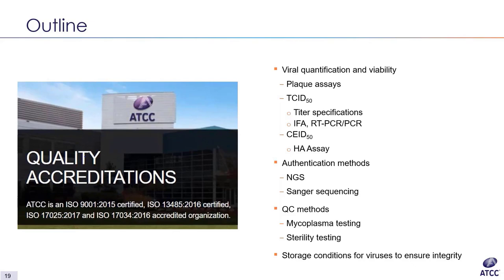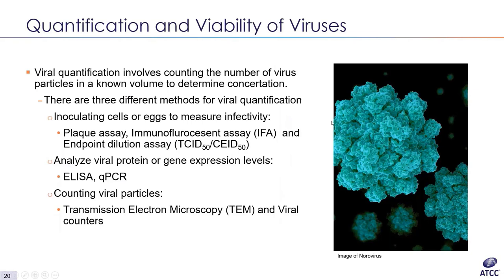We have an experienced quality management team that ensures the acquisition, authentication, preservation, development, and distribution of biological materials are performed under a documented quality management system. Today we will go over assays involved with viral viability and quantification, authentication of our viral products, and methods used to ensure we are providing quality items that meet ATCC's high standards. Determining the concentration of infectious particles in any given virus suspension is essential to the propagation of quality viral filters. There are three main methods of viral quantification.